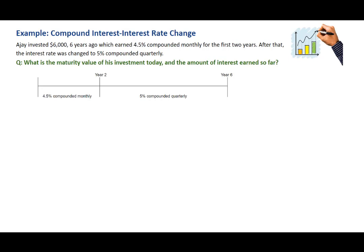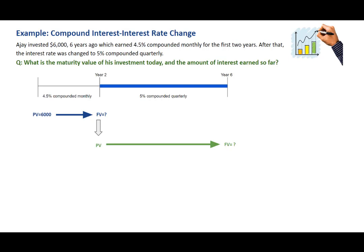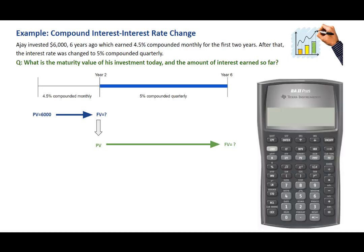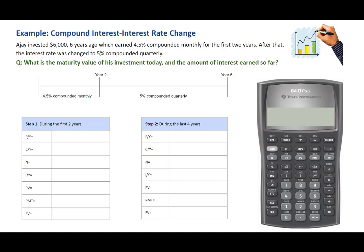In Step 1, we'll calculate the future value at the end of the second year. In Step 2, looking at the second time segment, the future value from the first time segment becomes PV. We'll then calculate the future value, which is also the maturity value of the investment after six years. There are seven variables involved with compound interest calculations: PY (number of payments per year), CY (number of compounding periods per year), N (number of compounding periods), IY (interest rate), PV (present value), PMT (periodic payment), and FV (future value).